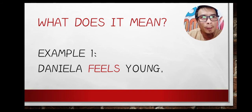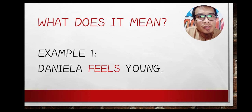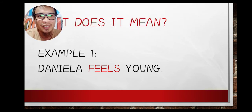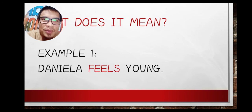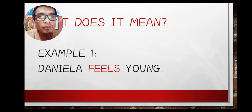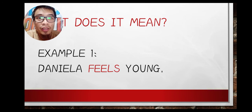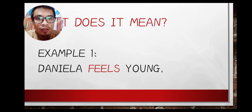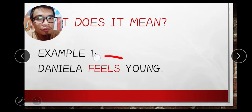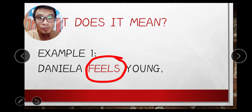Example number one: 'Daniela feels young.' First, we identify the verb of the sentence. The subject is Daniela, and the verb is 'feels.' The additional information is the adjective 'young.'